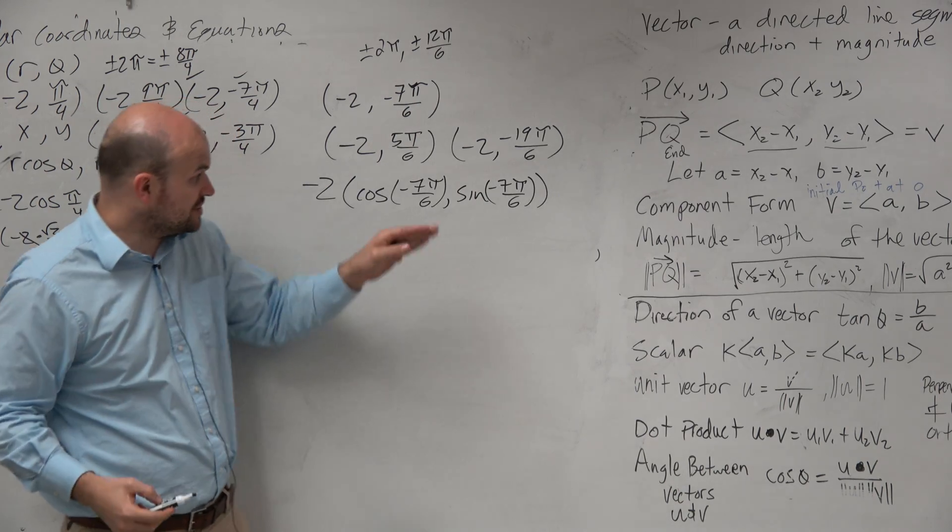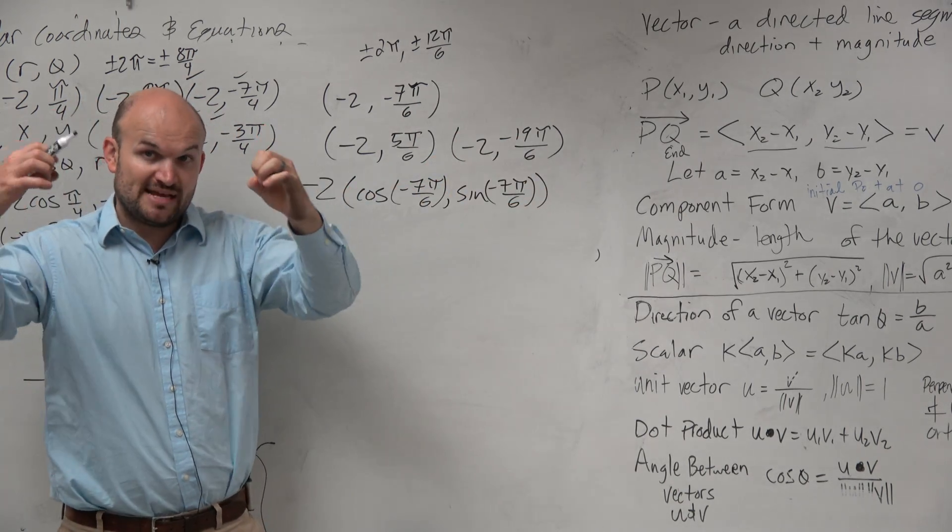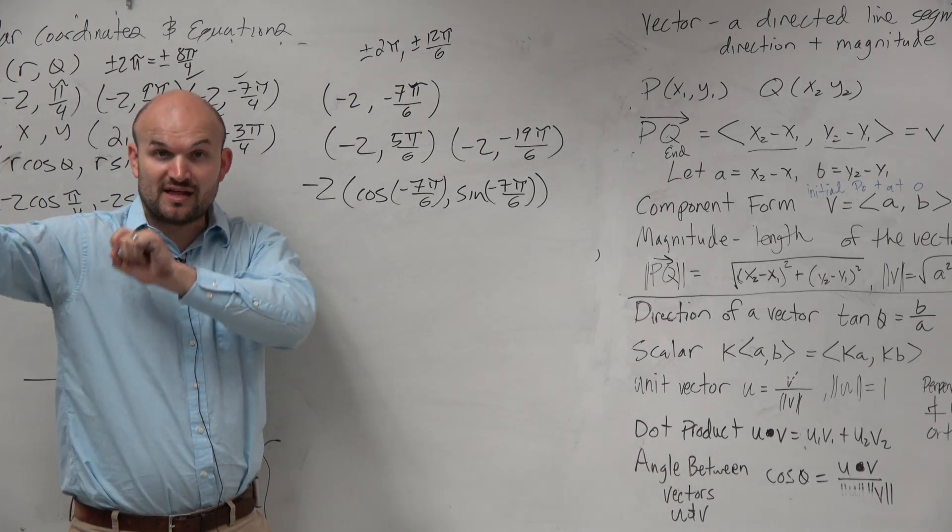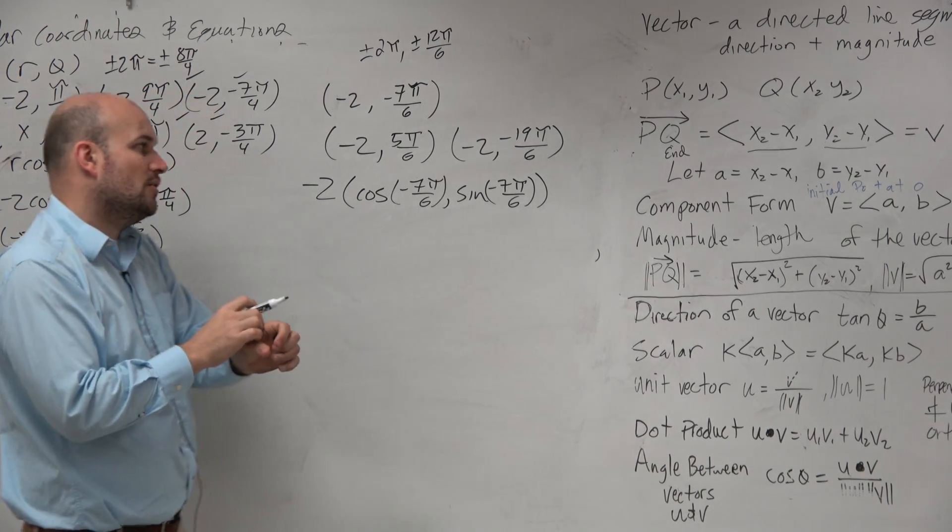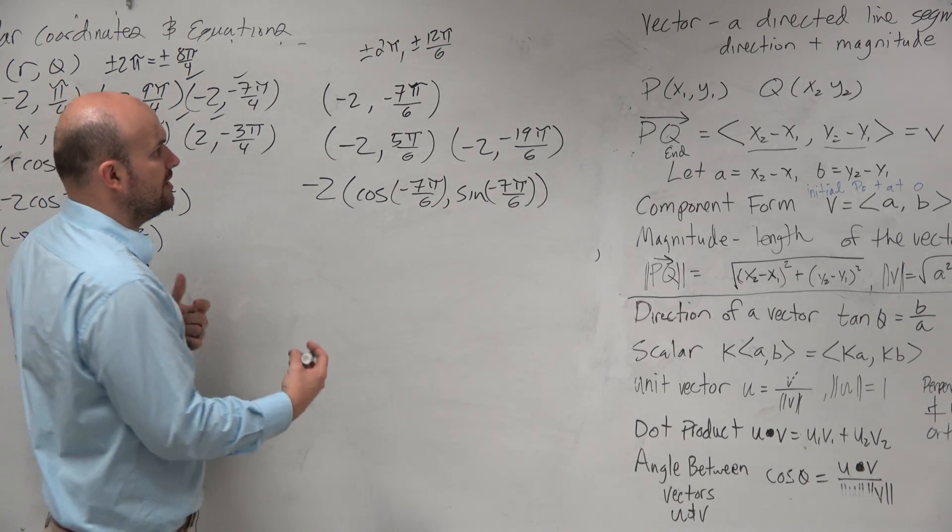It's not just changing the direction of the x-coordinate. It's changing the direction of the y-coordinate, which is basically represented as a reflection about the origin. So you could sketch this, find it, and therefore you can confirm it.